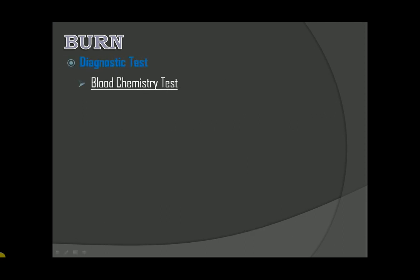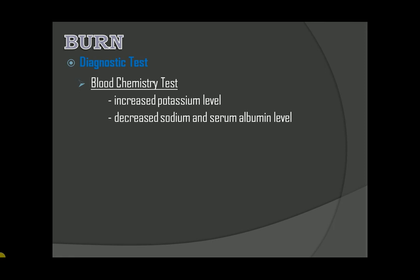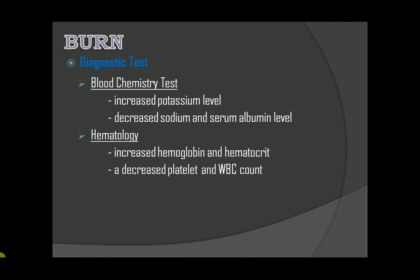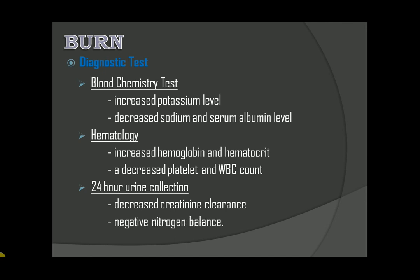Diagnostic tests: blood chemistry test will show increased potassium level and decreased sodium and serum albumin level. Hematology will show increased hemoglobin and hematocrit, and decreased platelet and WBC count. 24-hour urine collection will show decreased creatinine clearance and negative nitrogen balance. ABG will show metabolic acidosis.